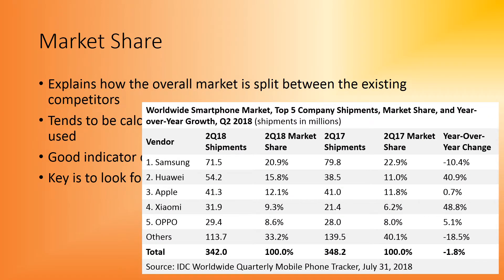Looking at worldwide smartphones, Samsung's overall year-on-year change is down 10.4%, but they are still the number one in shipments and market share globally. Their 2018 market share was 20.9% — meaning one in five phones sold in the world is a Samsung. Following that, Huawei has grown 40%, taking a significant chunk of market share from Samsung and others, reaching 15% of the overall market. This actually puts Huawei above Apple, so the ranking now goes Samsung, Huawei, then Apple for worldwide smartphone market share.